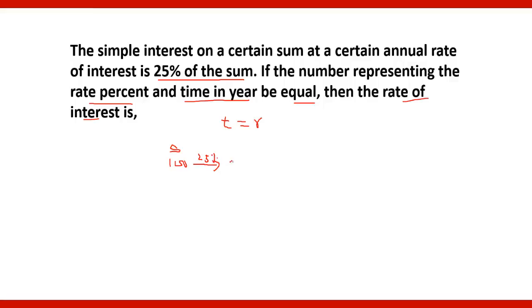So 25% of 100 is 25. Since simple interest is equal to PRT upon 100, you will get 25 is equal to 100 into R into T upon 100. T we have taken as R since they're the same. So it will be R into R that is R square upon 100. This 100 will get cancelled and you will get R square is equal to 25. And therefore R is equal to 5%, so the required rate of interest is 5%.